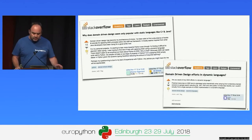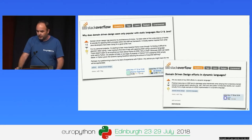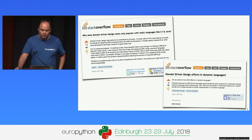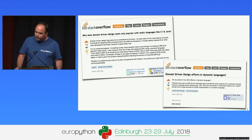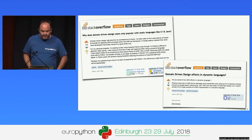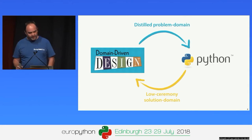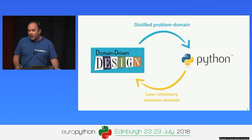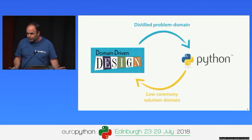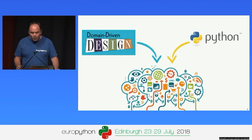Domain-driven design is often encountered in classic enterprise computing projects, nearly all written on the JVM stack in Java or on the .NET stack in C#. Some languages have picked up quite a big DDD community, like F#, but we see relatively little DDD activity in Python — which is a shame, because Python is a great fit for DDD. There's nothing happening in DDD that we cannot implement in Python. DDD is about distilling a problem domain down to its essence, and Python allows us to produce very low-ceremony solutions.